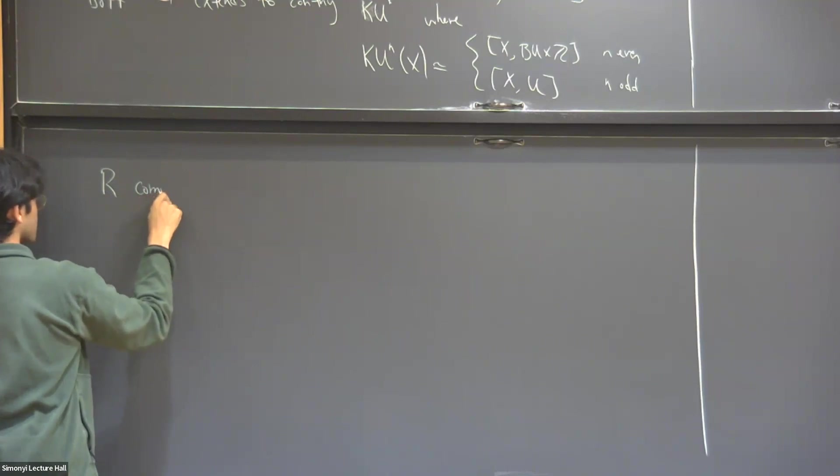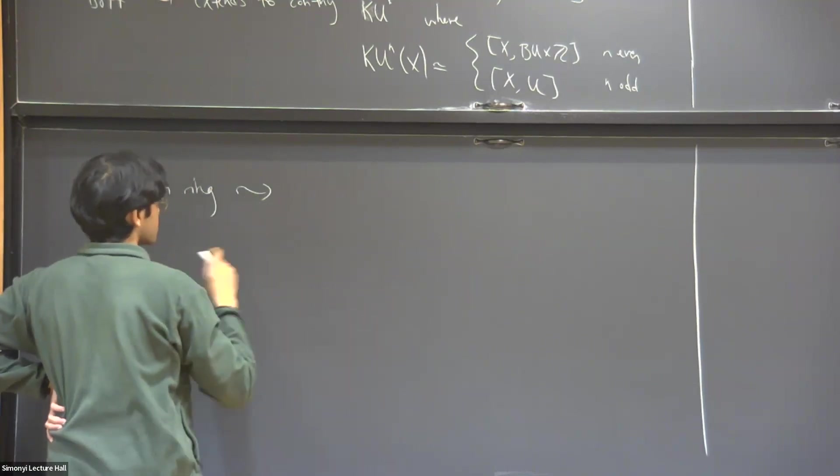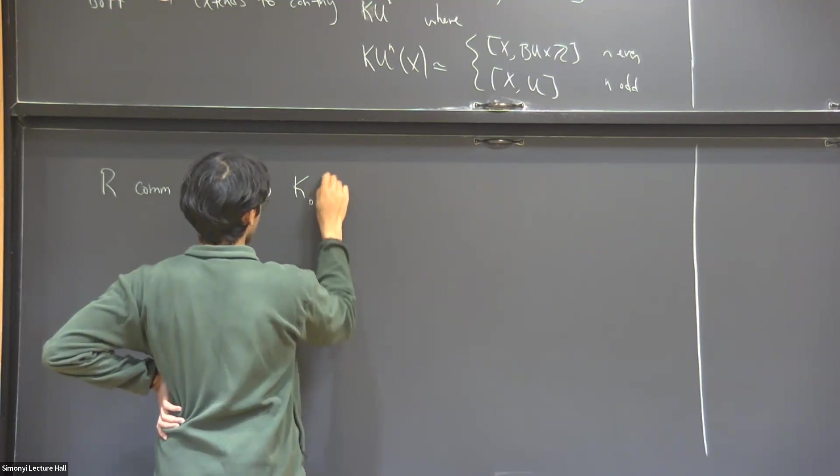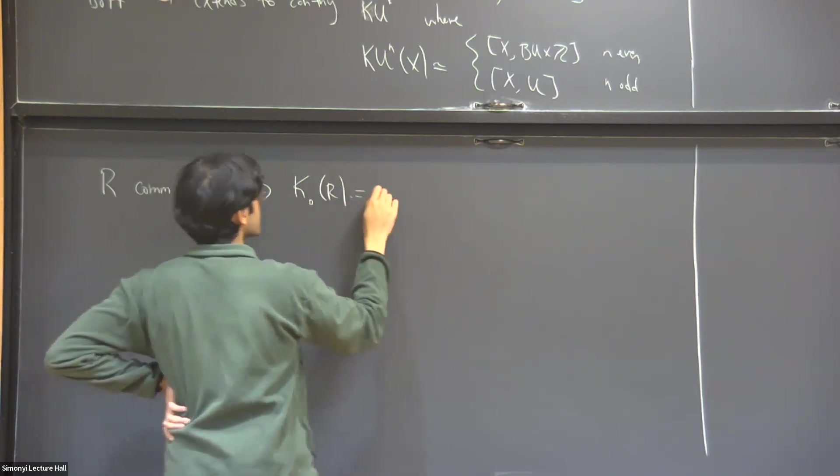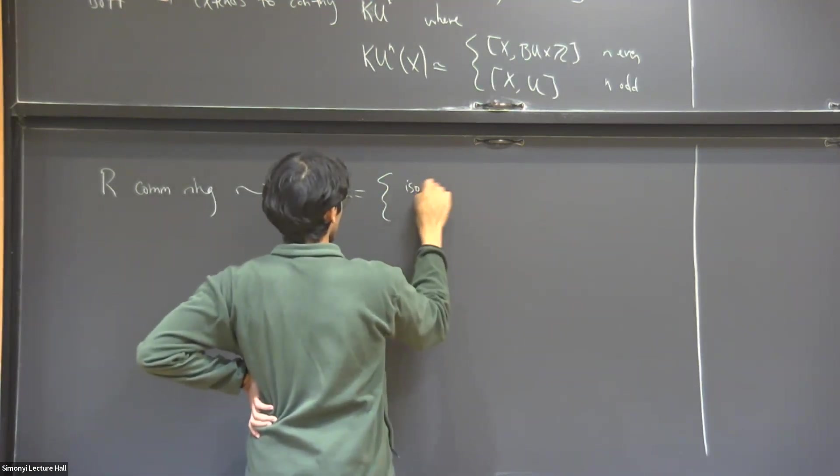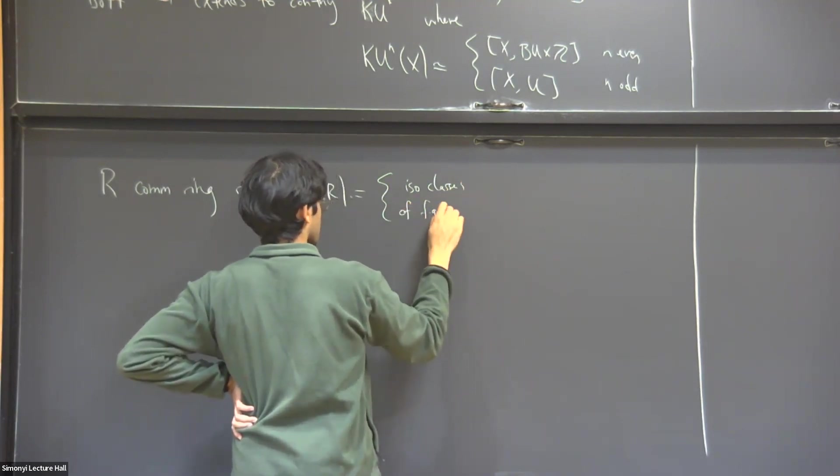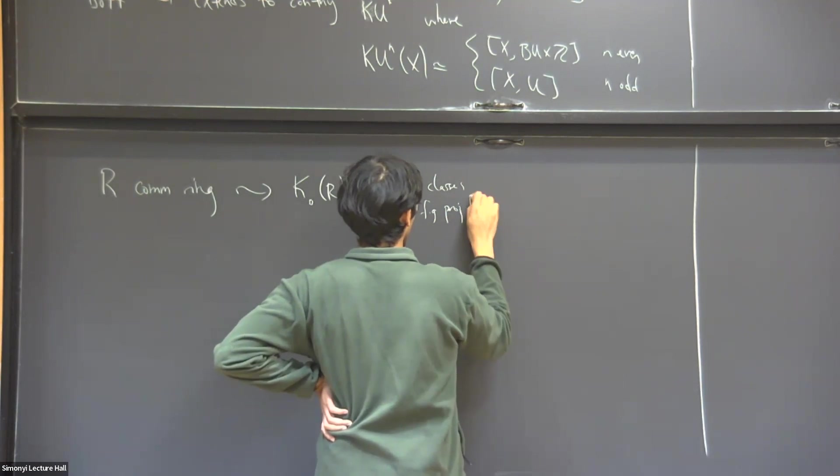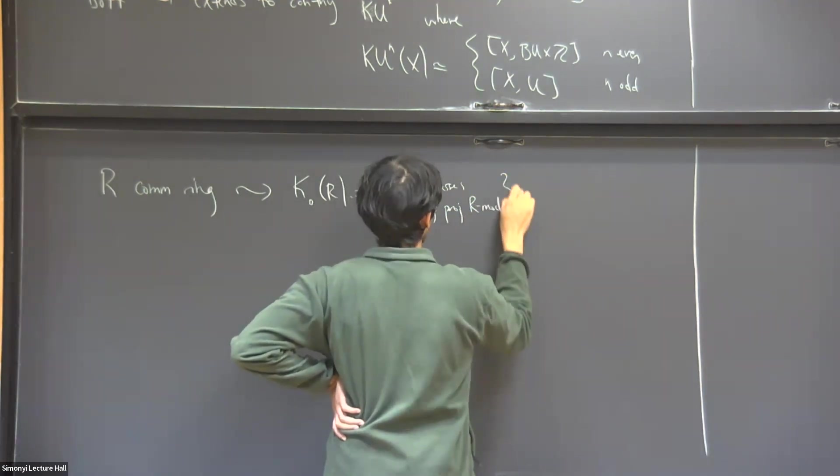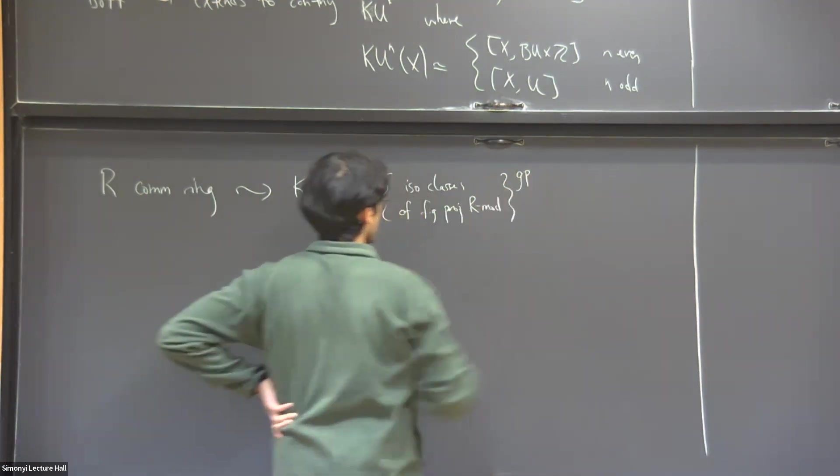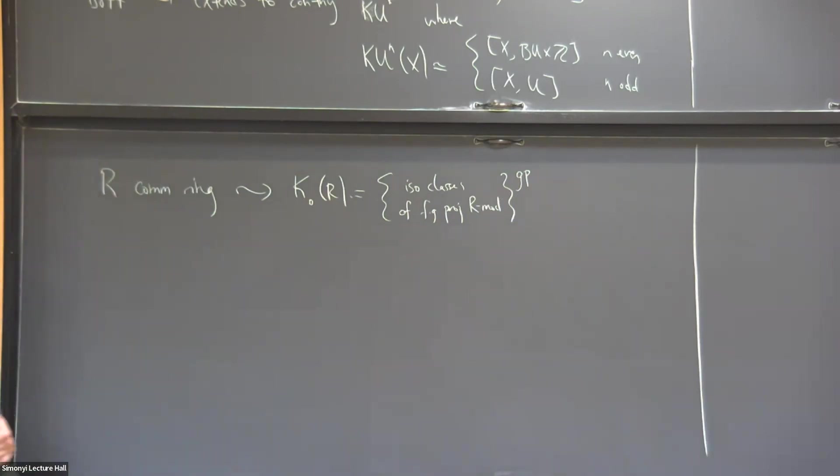If R is a commutative ring, then I can associate to it something called K_0 of R. It's very similar. I'll start with isomorphism classes of finitely generated projective R-modules. We can do the same group completion construction, analog of vector bundles in the algebraic setting. That's an analog of K_0.